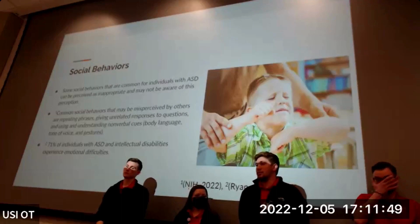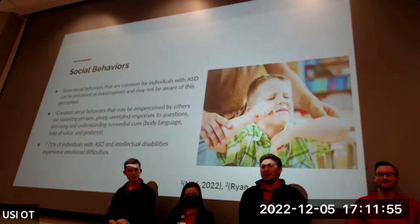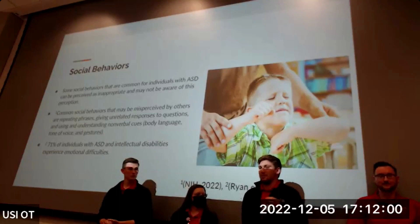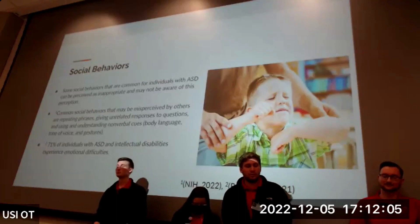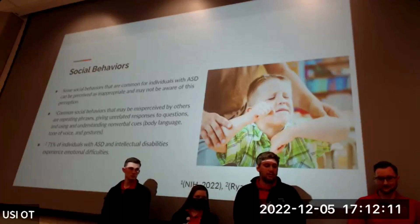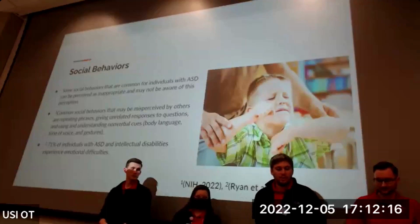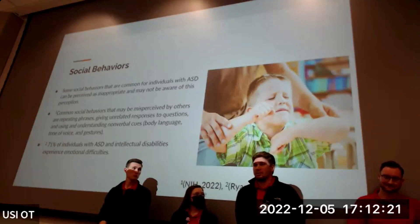Social behaviors of individuals with ASD can be perceived as inappropriate by others, and they may not be aware that their behavior is inappropriate. For example, on a sports field they might be running around inattentively or throwing a fit without recognizing it as problematic. Common perceived social misbehaviors include repeating phrases back to someone, giving unrelated responses to questions, and difficulty using and understanding non-verbal cues such as body language, tone of voice, and gestures.